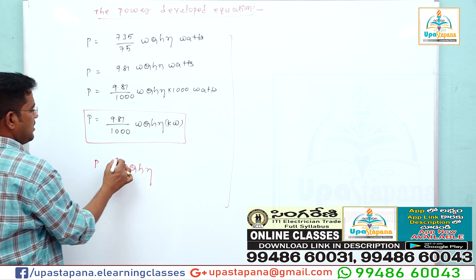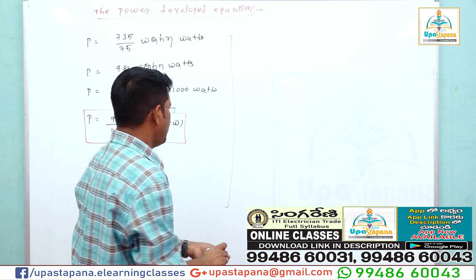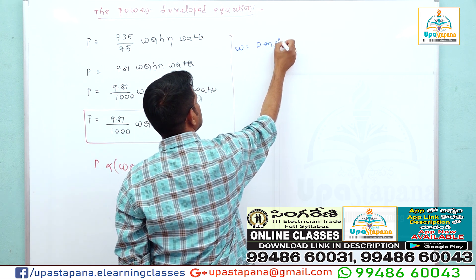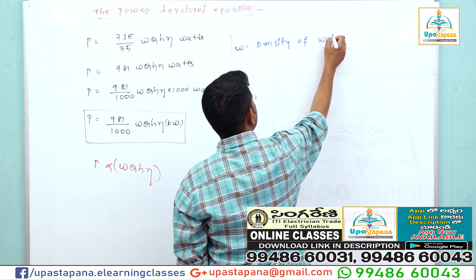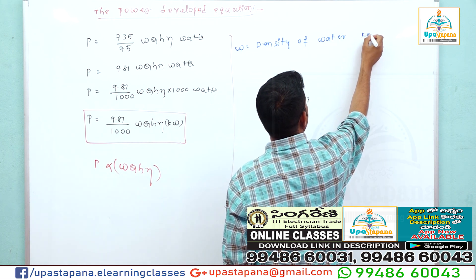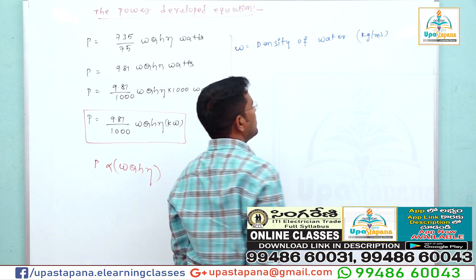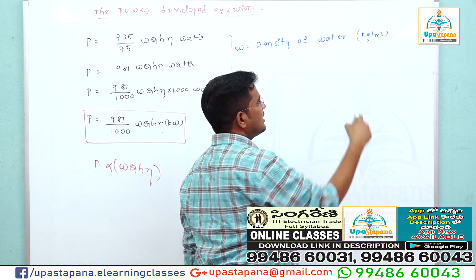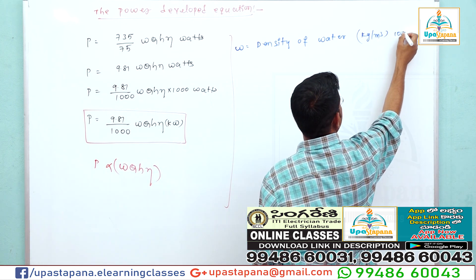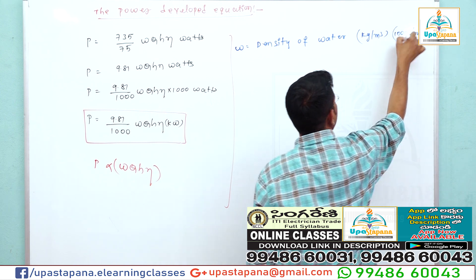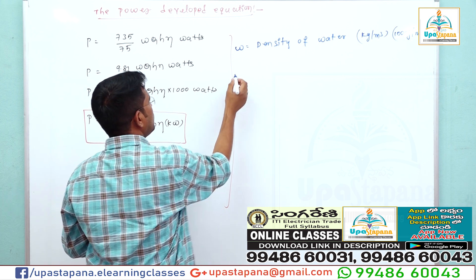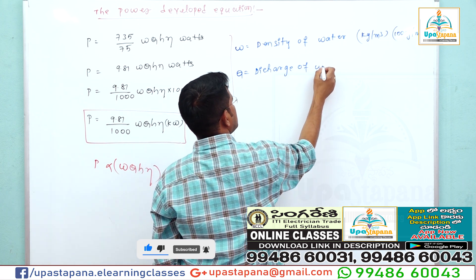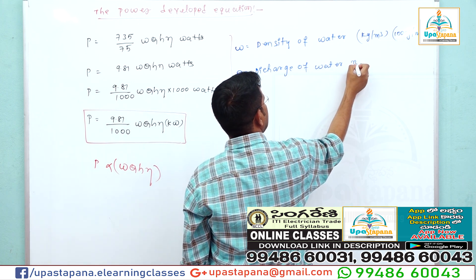Now we will see the variables. W is the density of water. The density of water, η — units are kilograms per meter cube, which is mass per meter cube. Density equals 1000 kilograms per meter cube. Q is the discharge of water, with units of meter cube per second.